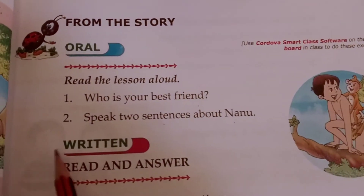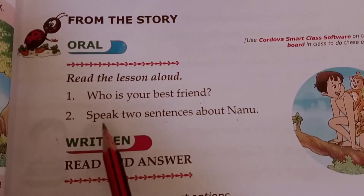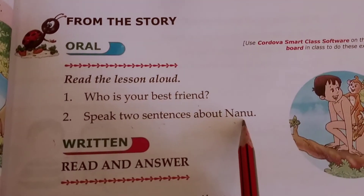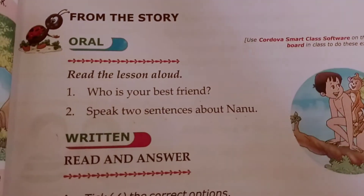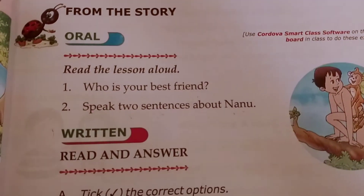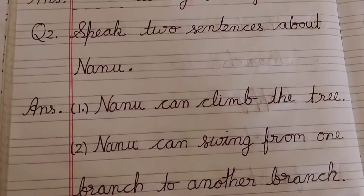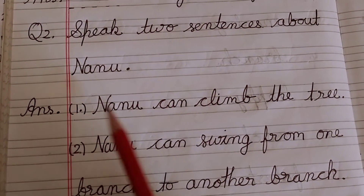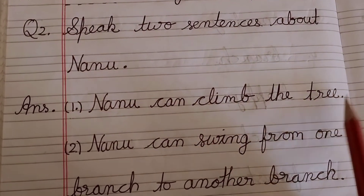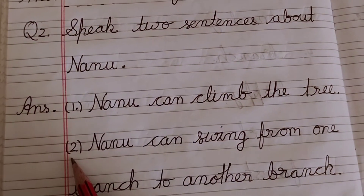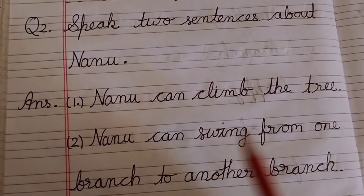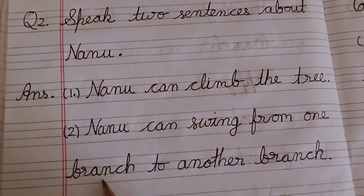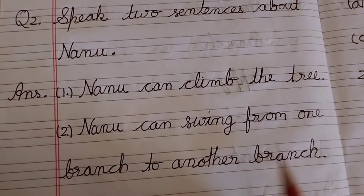Question number 2: Speak two sentences about Nanu. The answers are: Number 1 — Nanu can climb the tree. Number 2 — Nanu can swing from one branch to another branch.